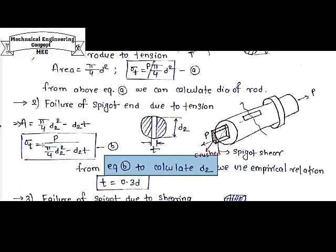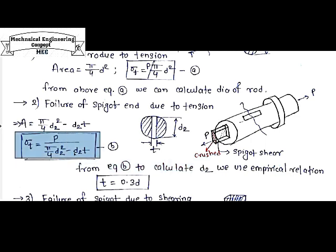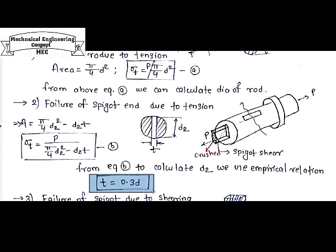To solve for two unknowns we use an empirical relation: T equals 0.3 times d. From this we can calculate T, since d was already calculated from the rod tensile failure equation A. Substituting T into equation B, we can then calculate D2.